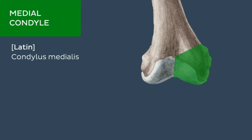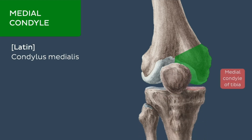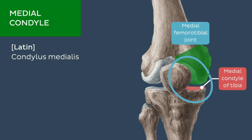The medial condyle of the femur is the shorter bony eminence of the distal femur. It articulates with the medial condyle of the tibia via the medial meniscus, forming the medial femorotibial joint, a component of the knee joint.